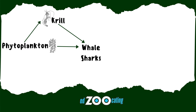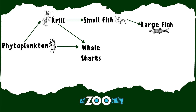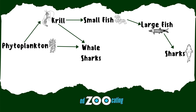That krill is also eaten by small fish, which are then eaten by large predatory fish, which can sometimes be eaten by sharks — making the sharks a quaternary consumer. So remember we were talking about how there can be even more consumers than tertiary? This is one of those examples. Those sharks will also eat small fish if given the chance.